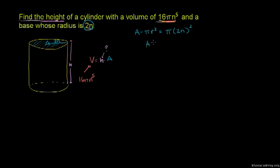For the cylinder, the area formula is πr squared. When you substitute r with 2n, you can calculate the base area.